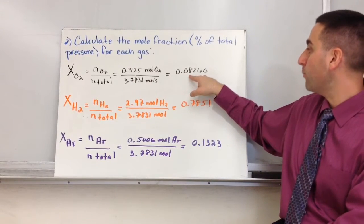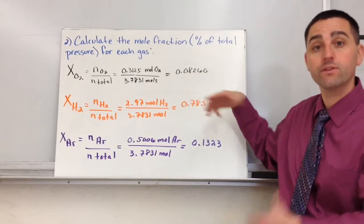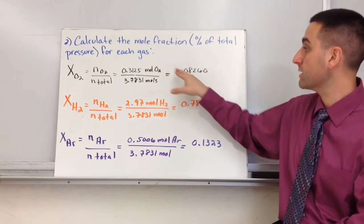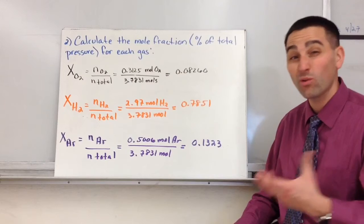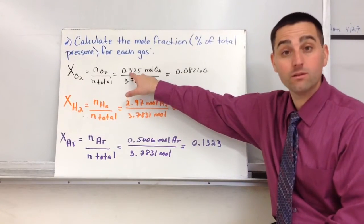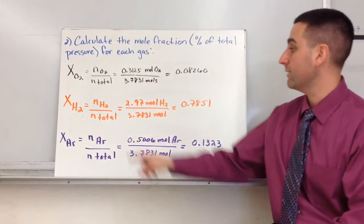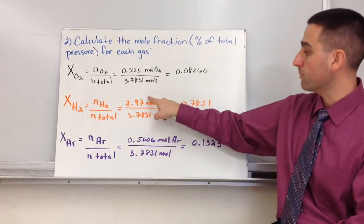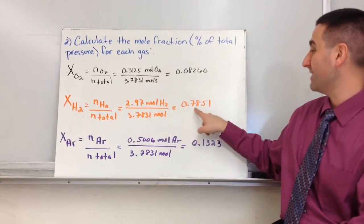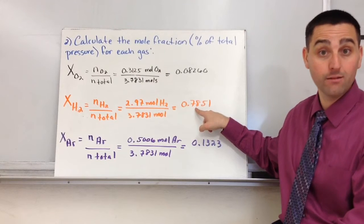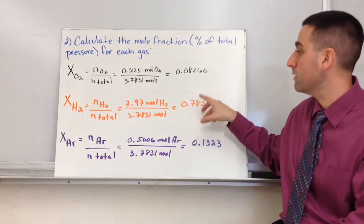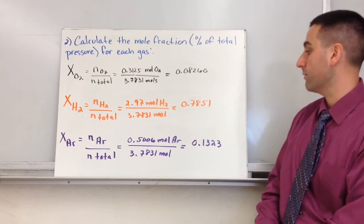My number of moles of O2 divided by the total moles of all three gases - that's a really small number, right? That would be 8.26% of the total pressure is exerted by oxygen. We didn't have a whole lot of it, if you remember. We only had a third of a mole of oxygen. Look at N2, it makes up the bulk of my mixture, 78.51%.